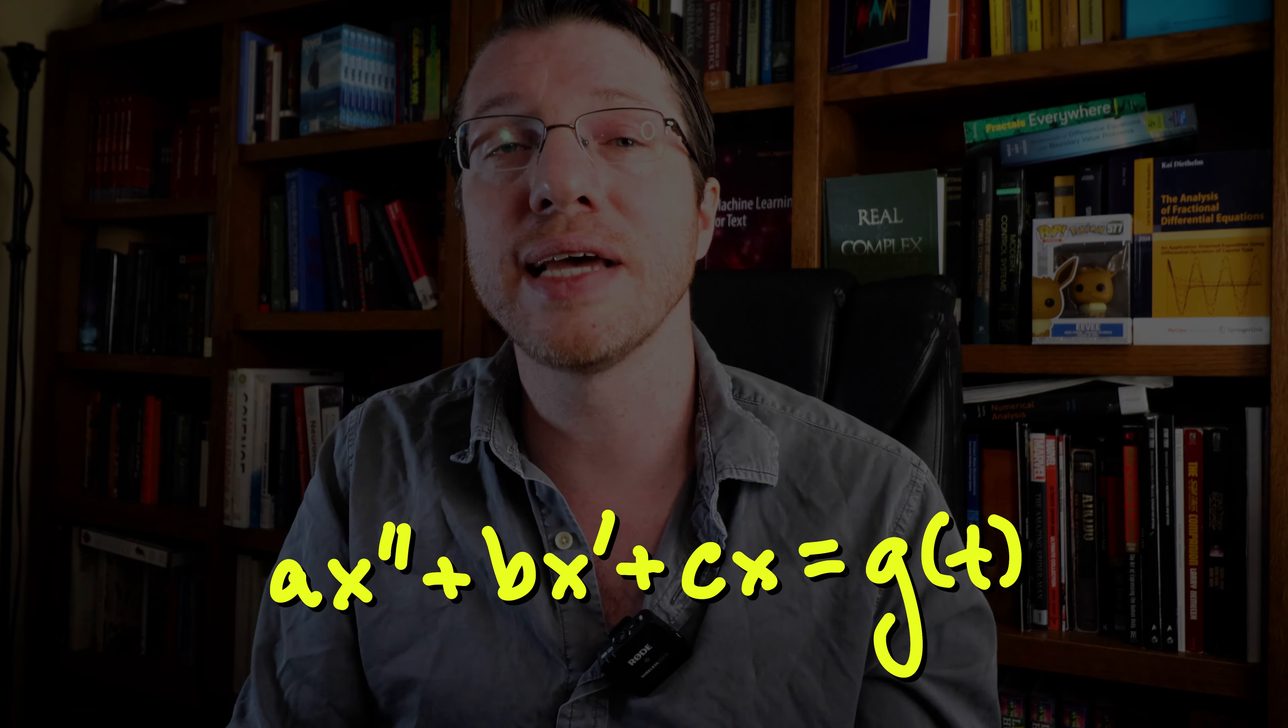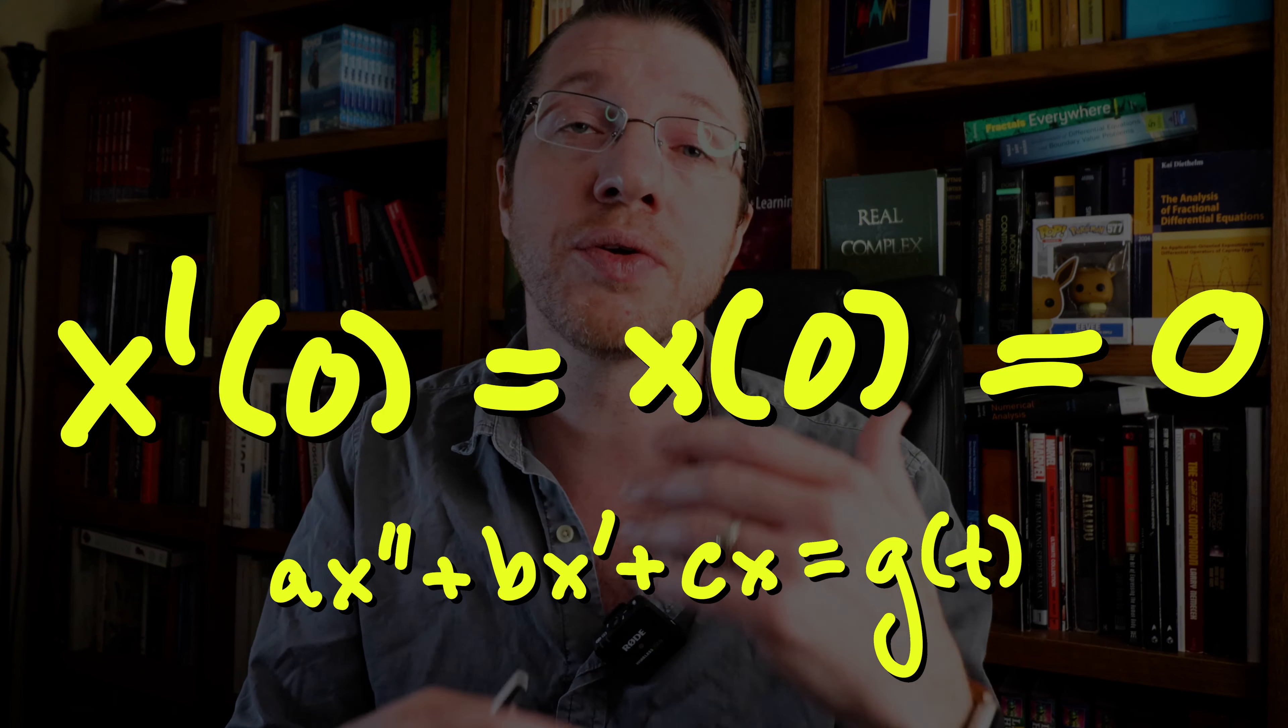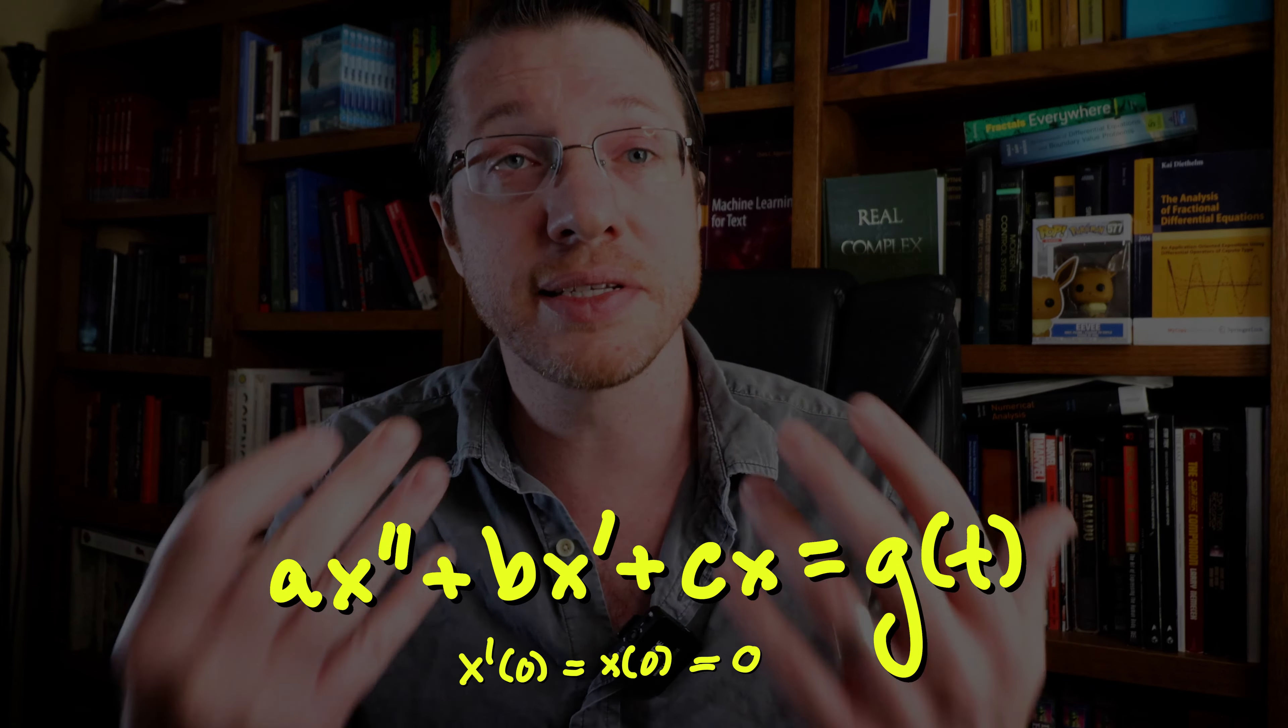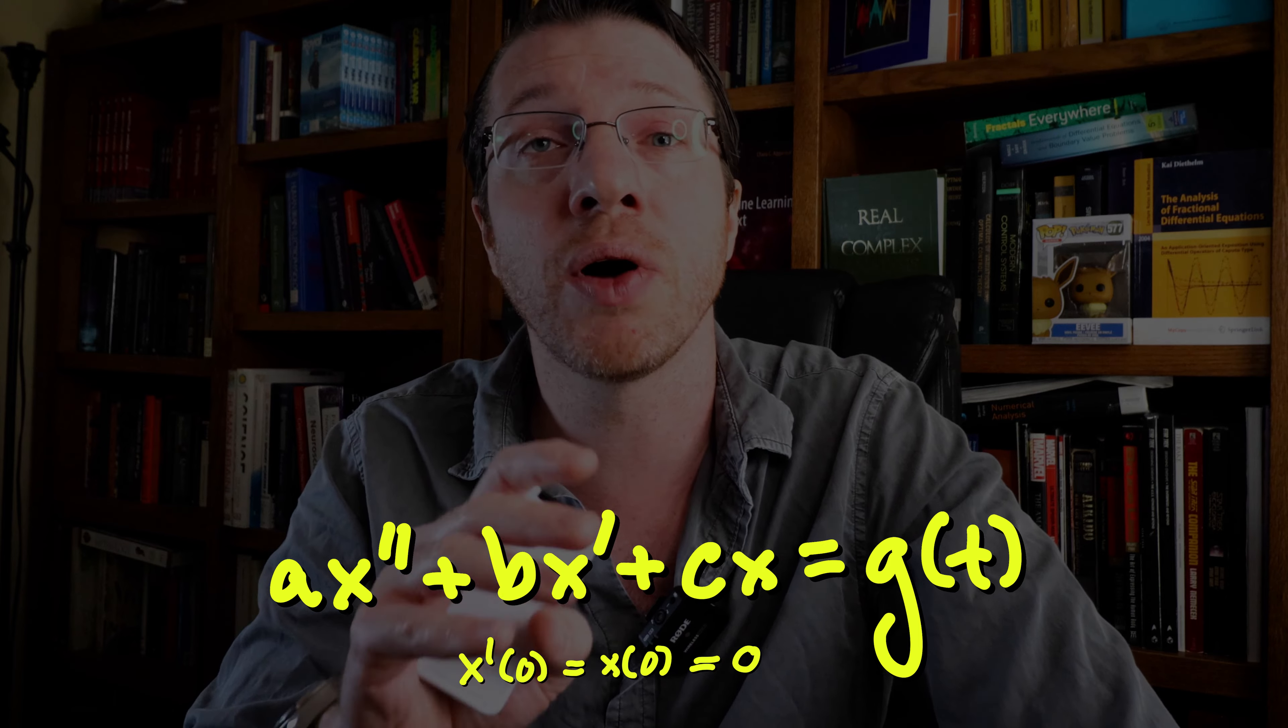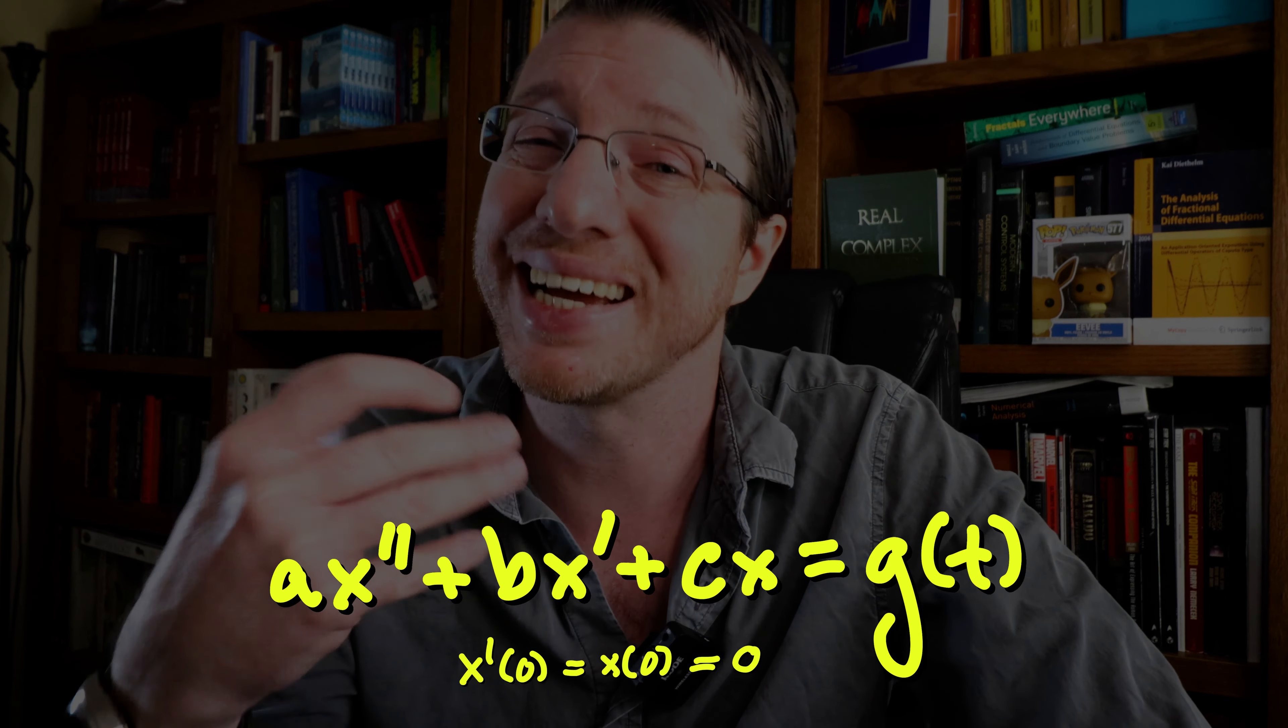Let's assume the initial conditions x of zero and x prime of zero are both zero. It's not only a convenient assumption, but it is also theoretically necessary owing to the definition of the Laplace transform on what are called distributions, like the delta function.